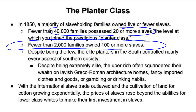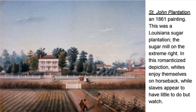With the international slave trade outlawed and cotton cultivation exploding in the south, the price of slaves rose way above and beyond the ability of lower-class whites to make their first investment in slaves. Large plantations bought out struggling smaller farms — a trend that had been going on since the colonial period — and it only accelerated when slave prices went up after the international slave trade was banned.